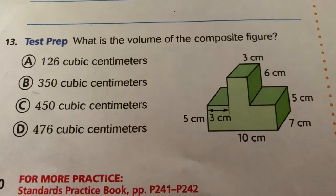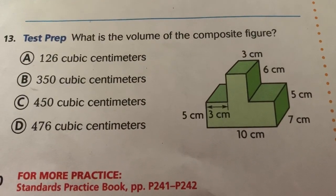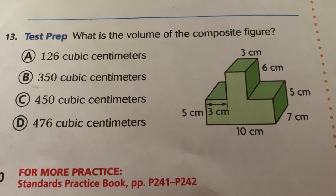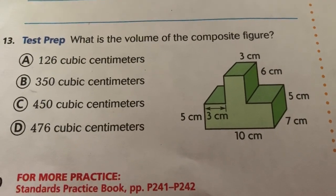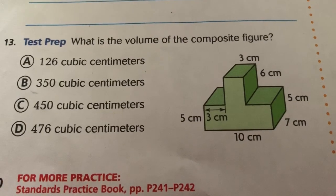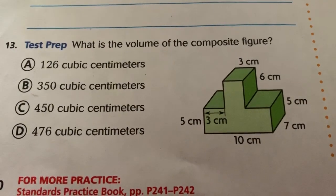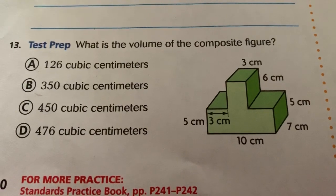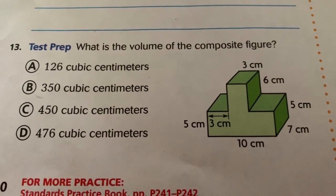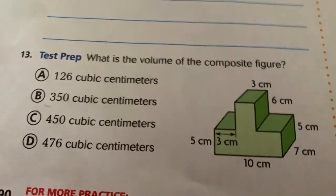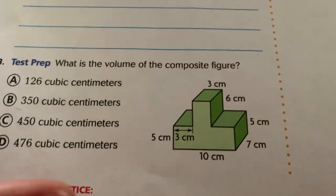What is the volume of this composite figure? Do you see that figure? It has two different rectangular-looking things. Is it A: 126 cubic centimeters, B: 350 cubic centimeters, C: 450 cubic centimeters, or D: 476 cubic centimeters?